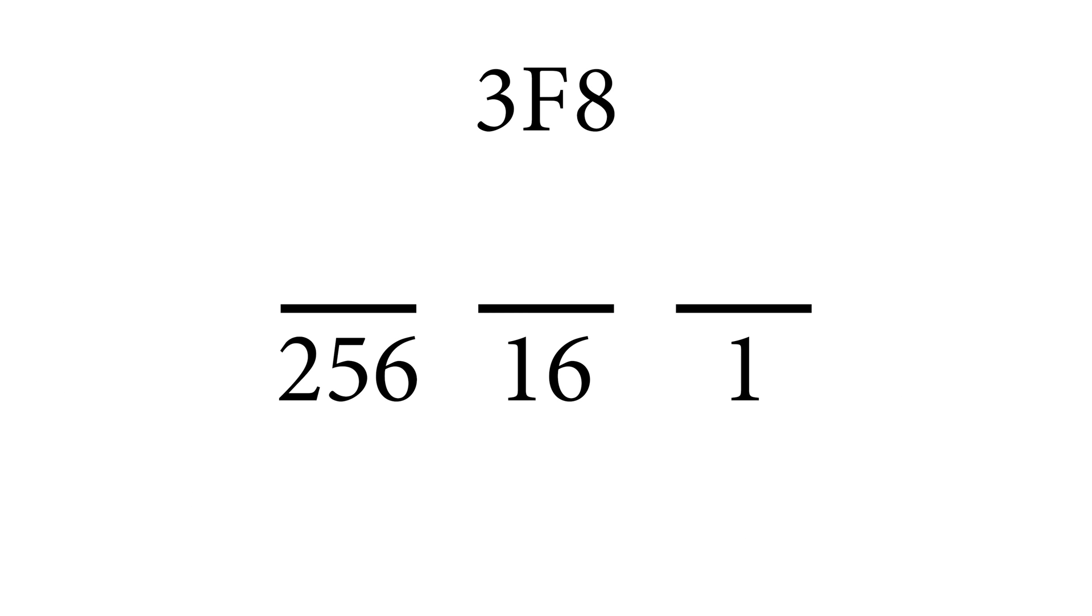If we go to the number 3F8 again, we have three digits so the 3 is going to be 256, the F is going to be 16, and the 8 is going to be 1 and just like binary, all you're gonna do is multiply down what these values are with the value associated with where they are sitting and add them.